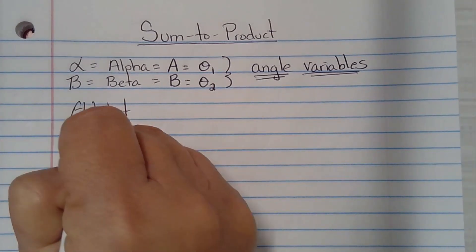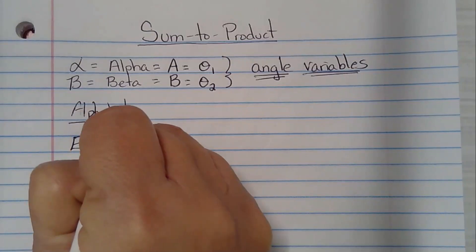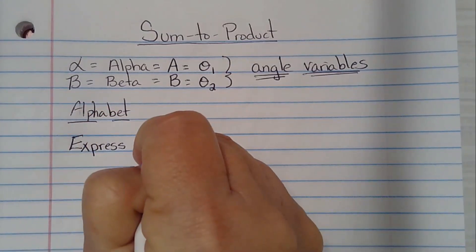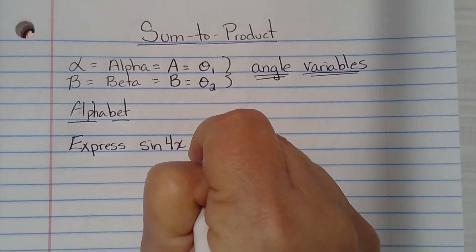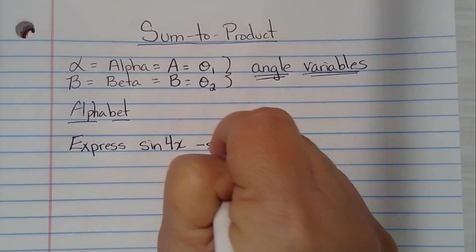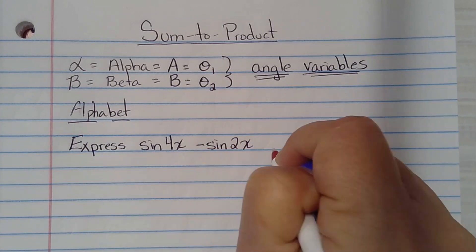We're just going to jump into an example. Express sine 4x minus sine 2x as a product.